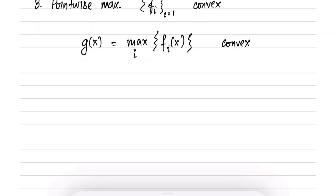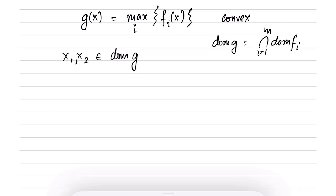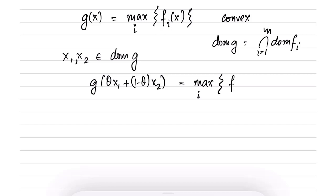Let us verify this using the zeroth order condition. Let x_1 and x_2 be two points in the domain of g — note that the domain of g is the intersection of the domains of f_i, so all points where each f_i is defined. We calculate g(θx_1 + (1−θ)x_2), which equals max_i f_i(θx_1 + (1−θ)x_2).